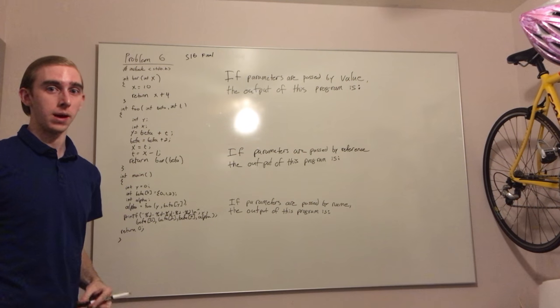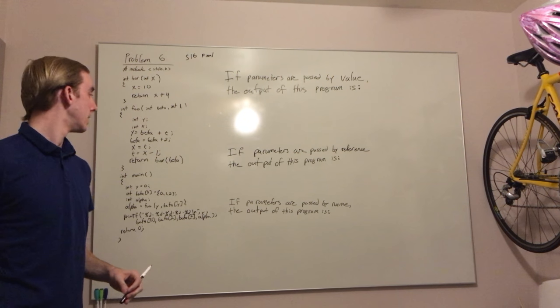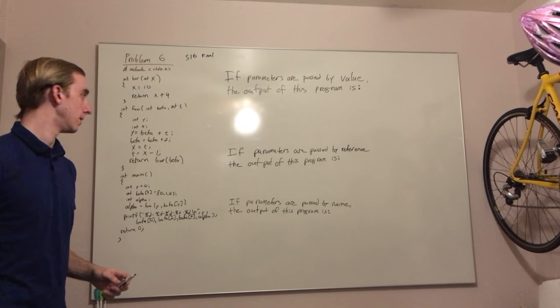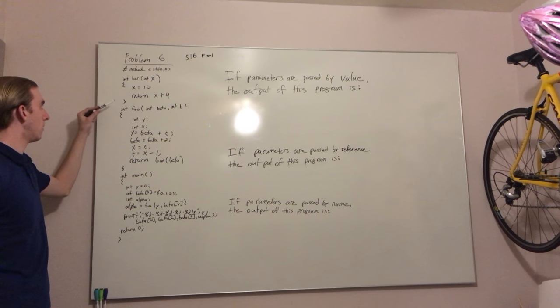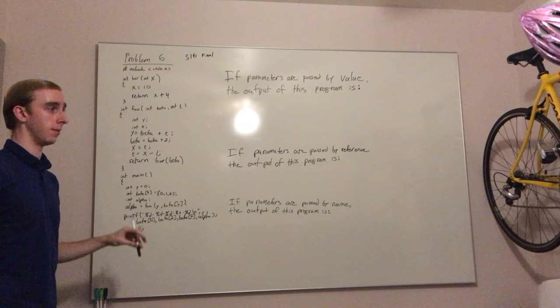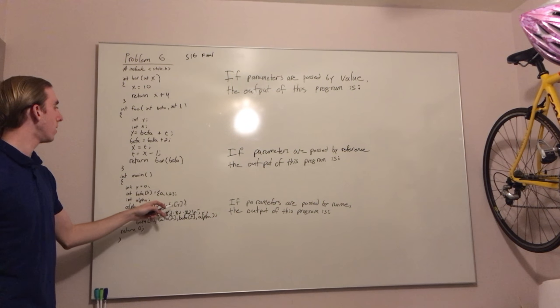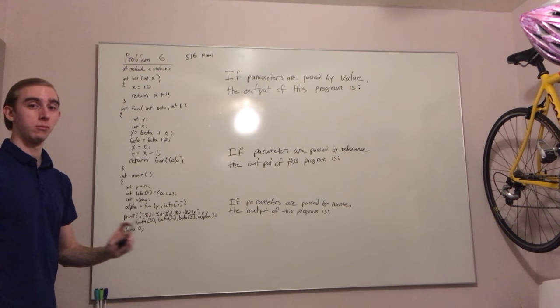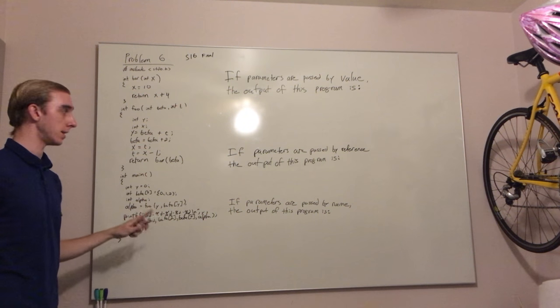We will start with passed by value. This is the simplest case because nothing that happens in foo or bar will affect the parameters they pass into them. So y, beta y, and beta will never change in this case.